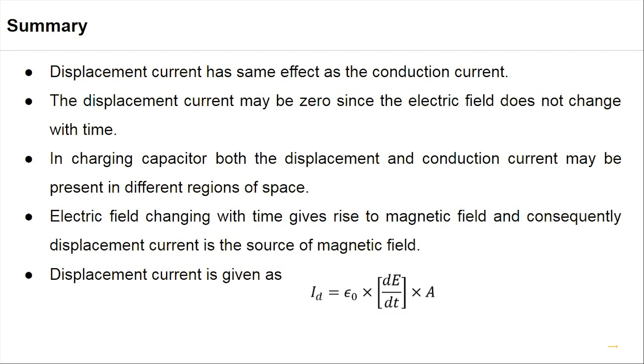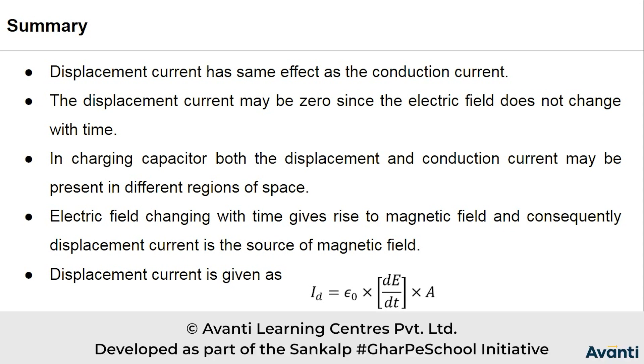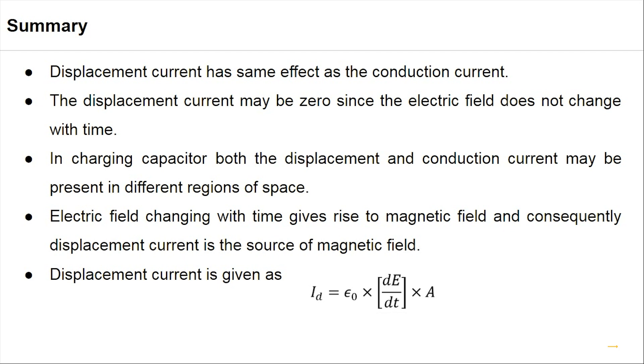Displacement current has the same effect as the conduction current because displacement current and conduction current both produce magnetic field. Because we have magnetic field in the capacitor, it means current just like any other current can produce this magnetic field. Displacement current may be zero since the electric field does not change with time. If electric field is not changing with time, then displacement current is zero. When charging a capacitor, displacement current and conduction current both may be present in different regions, both together.